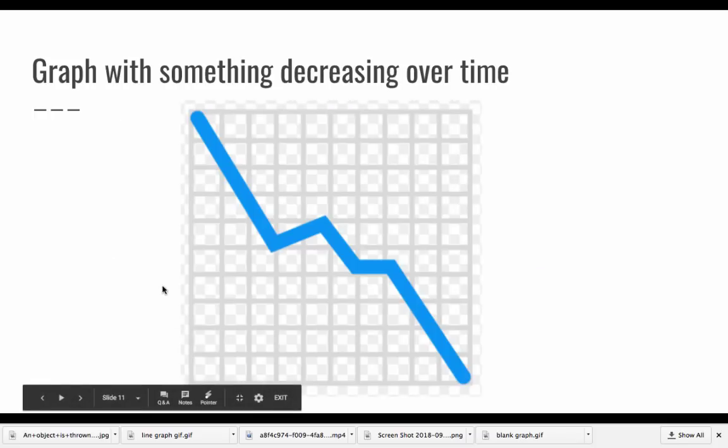The opposite would be if something is decreasing over time. If my time is on my x-axis, which goes across, the time is going to grow and something decreases. It starts high on the left. And then as the time moves along, the amount is going down on my y-axis. And it looks like a downward slope like you're going down a hill.